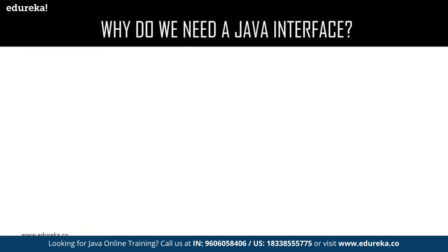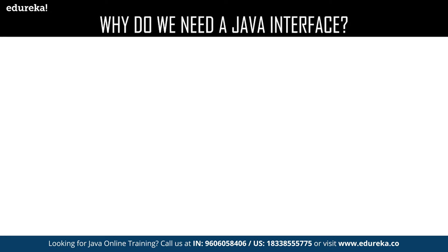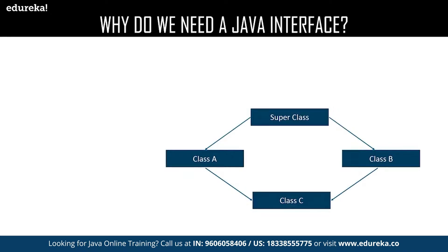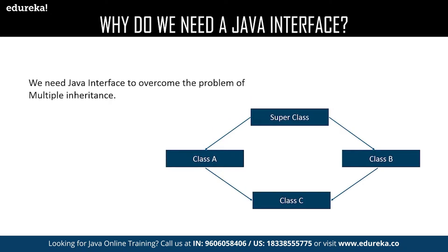We all know that Java supports inheritance, but when it comes to multiple inheritance Java cannot support it. It ends up facing ambiguity between two pairing classes and fails to provide the required result. This particular problem is called the diamond problem.